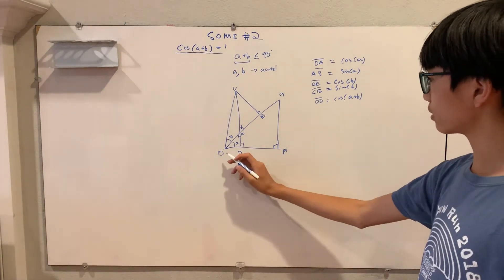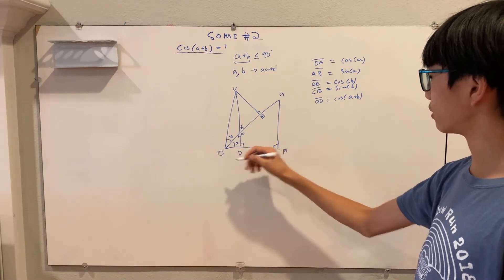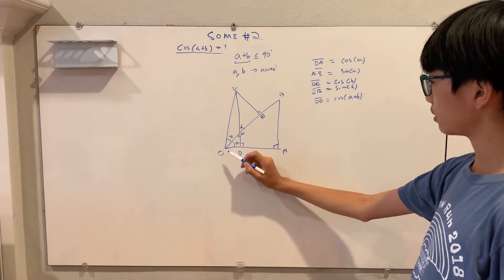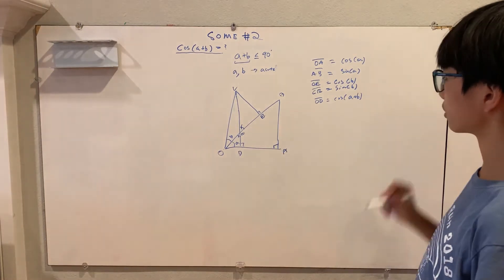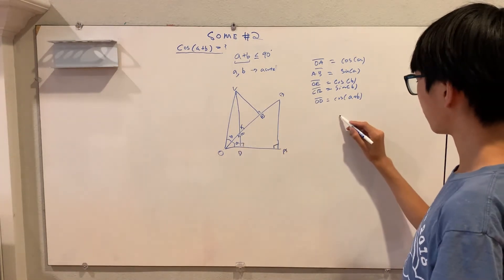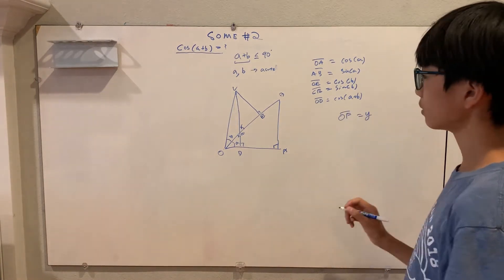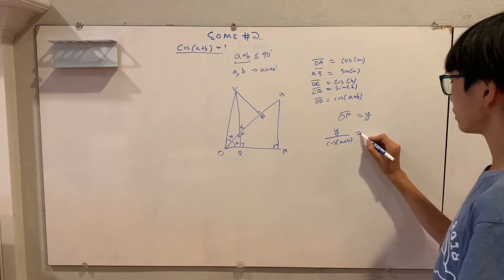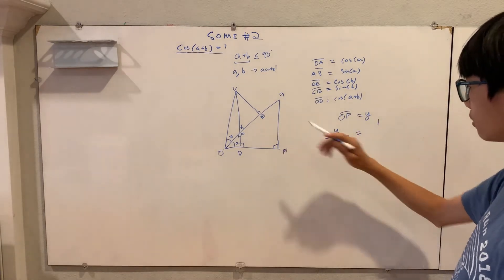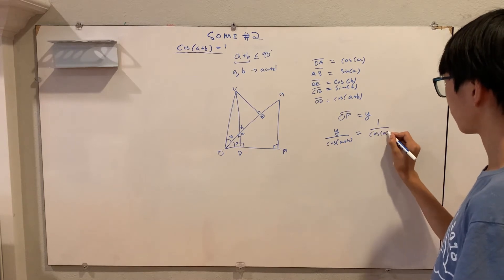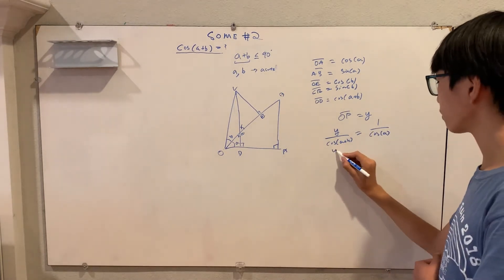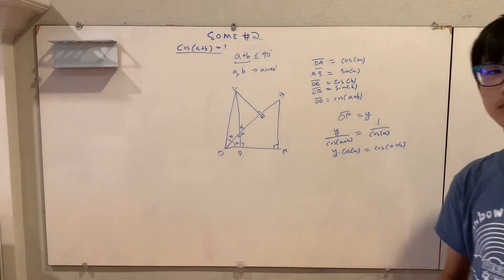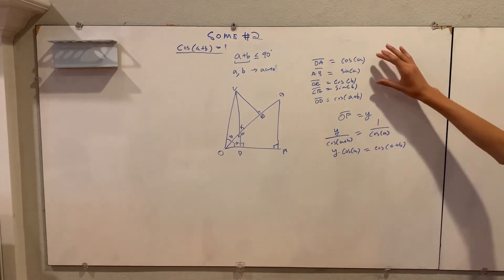I'm going to start off by using the similarity between ODF and OAB to show that OF over OD is equal to OB — which is 1 — over OA, which is cosine a. For now, we'll call OF as Y since we don't know what it is yet. So Y over cosine of a plus b, which is OD, is equal to 1 over cosine of a. Doing cross multiplication, we can see that Y times cosine of a is equal to cosine of a plus b. But we still don't know what Y is, so we can't yet find cosine of a plus b using only those four terms.